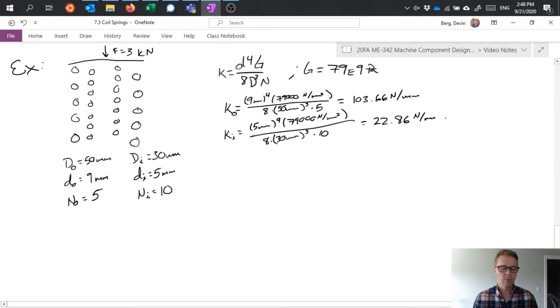And I get a spring rate of 22.86 newtons per millimeter. So our smaller inner spring we can see has a lower spring rate. We would probably expect that, right? The larger size, larger wire diameter of the outer spring would lead us to expect that the outer larger spring is going to be stiffer.